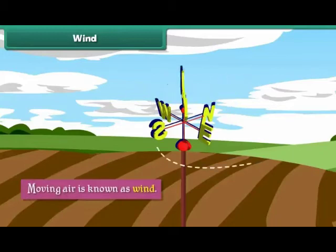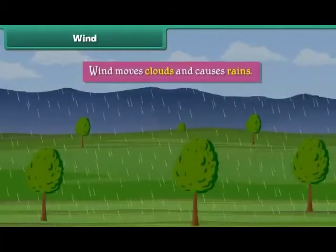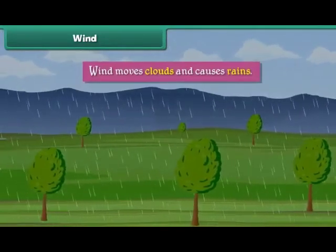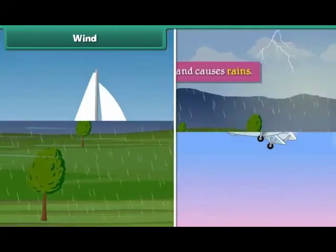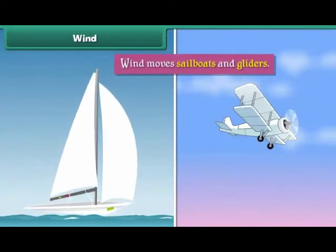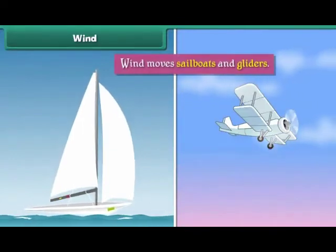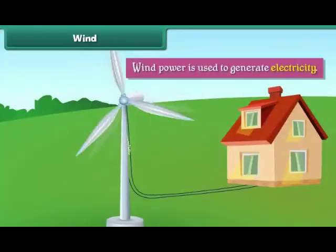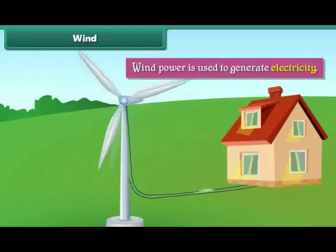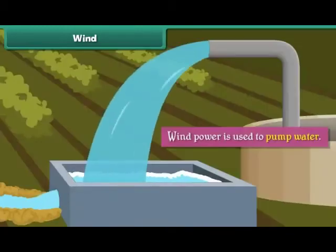Moving air is known as wind. Wind moves clouds and causes rain. Wind moves sailboats and gliders. Wind power is also used to generate electricity and to pump water.